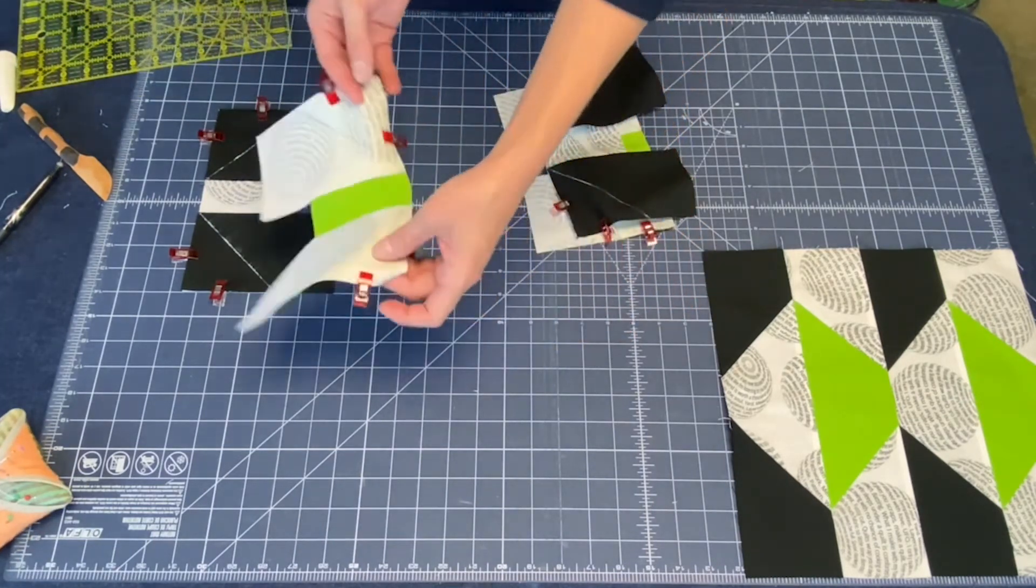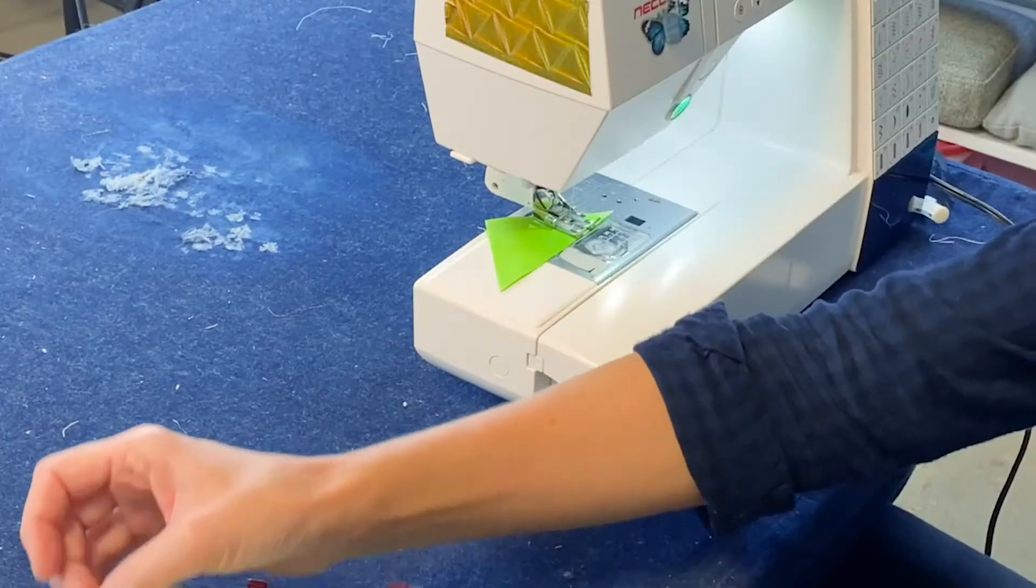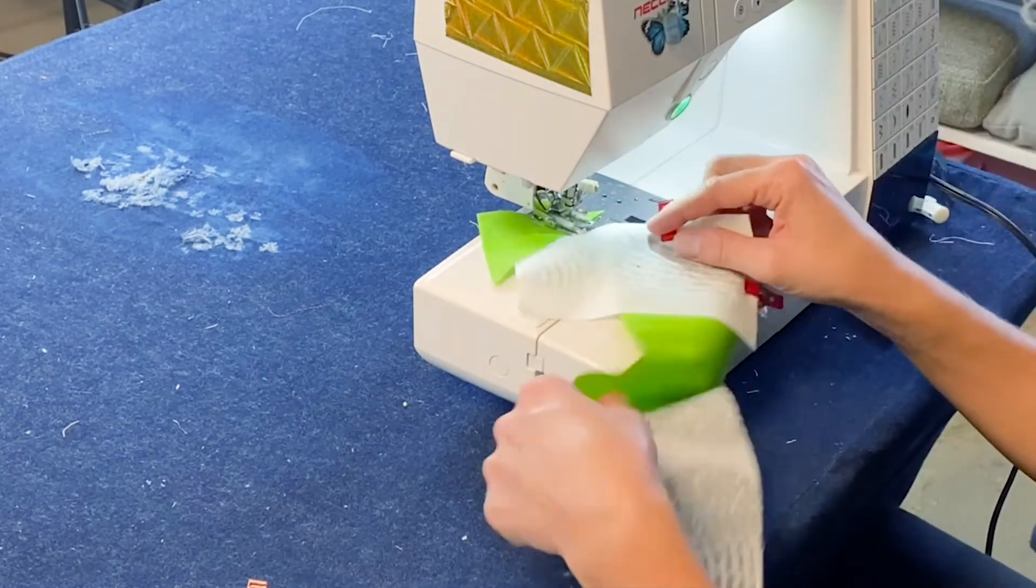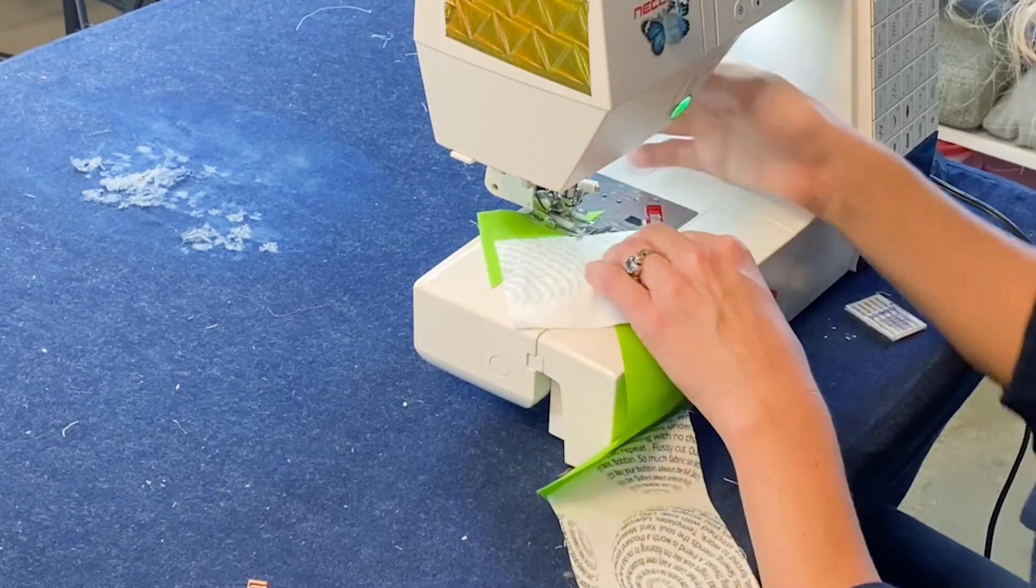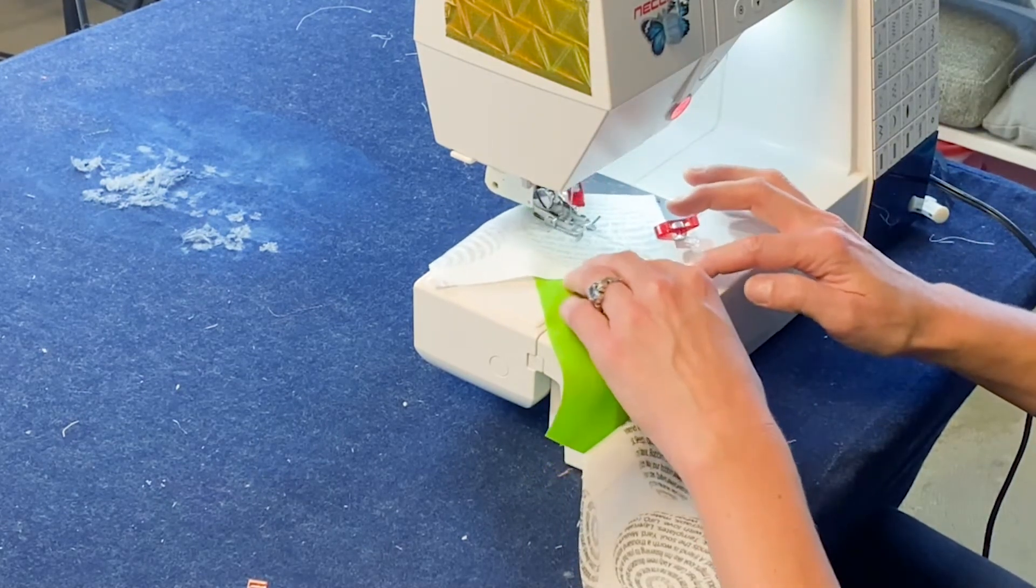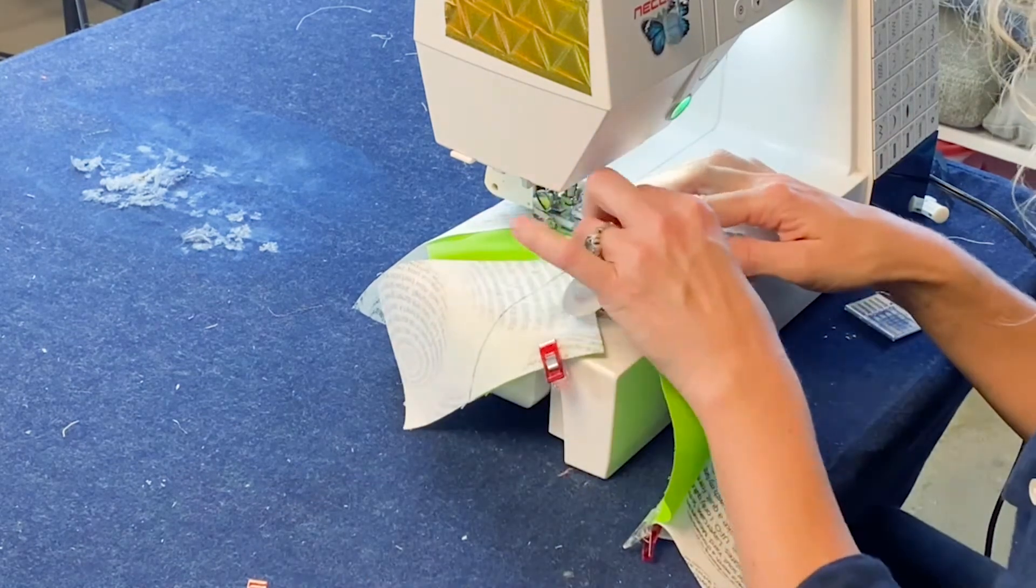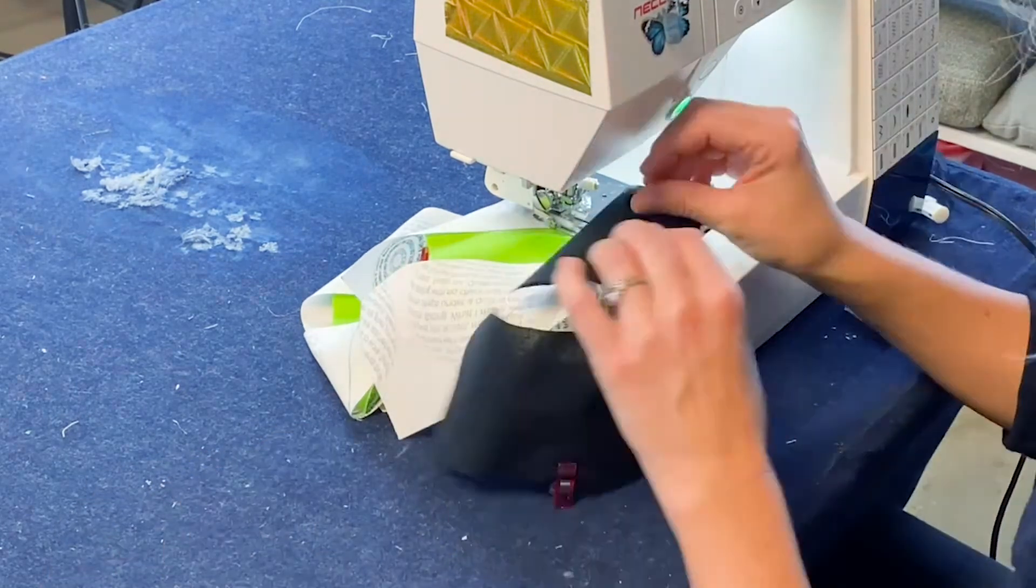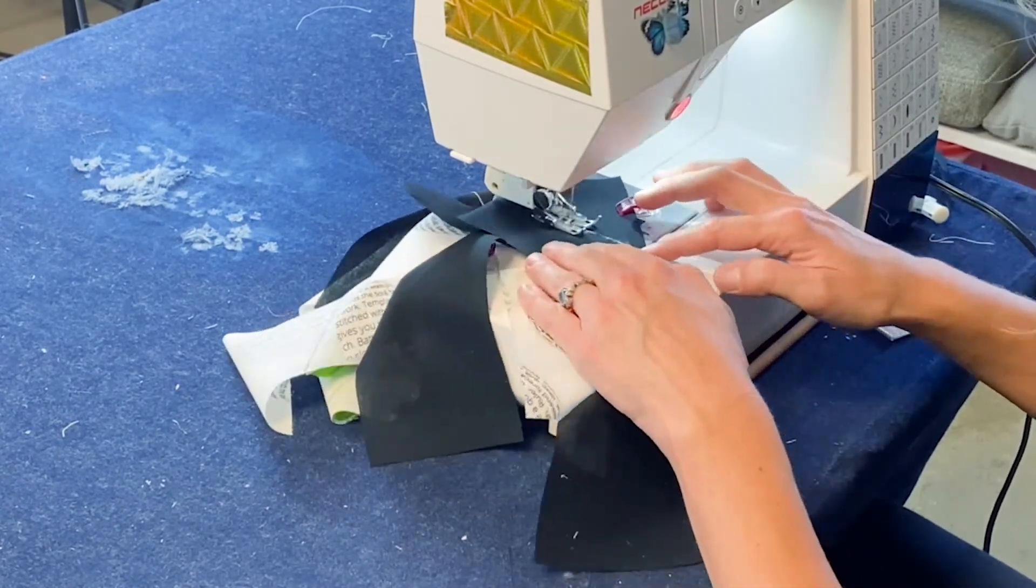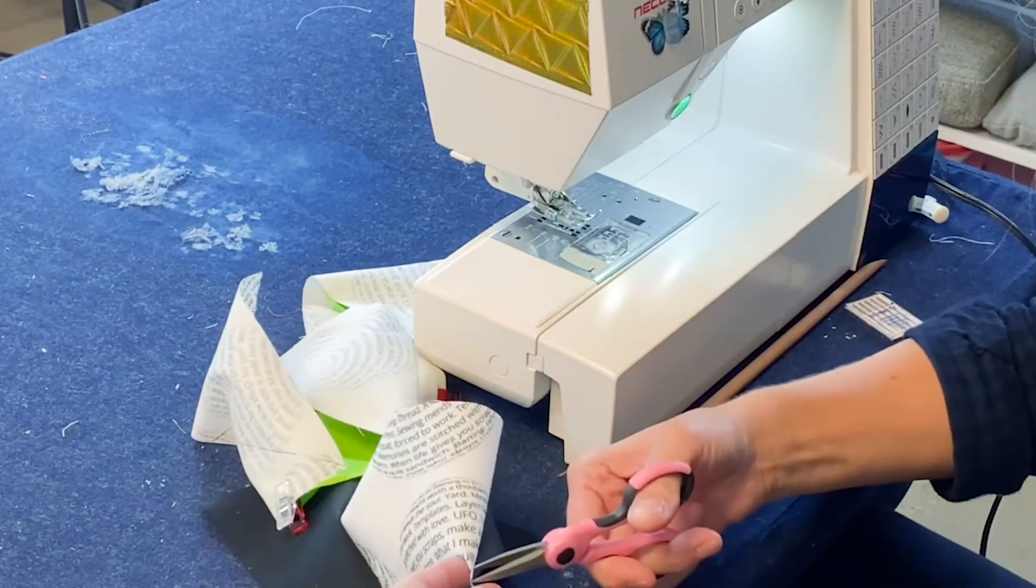All right, so now we have our two green and our two white pieces with our accent colors and we're going to go over to the machine and sew them all at once. Now that we have them marked, we are going to sew straight on the line. Now that we have sewn one side, we're going to clip apart our little trail and sew the other side.